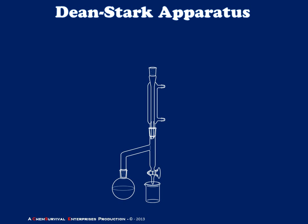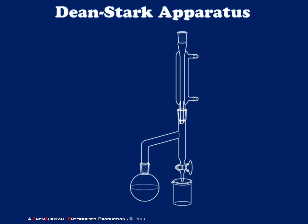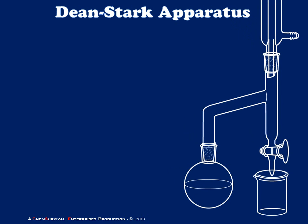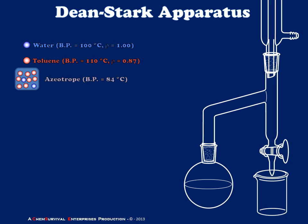Now that you've had your tour of the Dean-Stark apparatus, let's take a look at this thing in action. Let's begin by considering a very simple system: naturally water will be involved, with a boiling point of 100 degrees and a density of 1. Let's try to isolate this water from toluene, which boils at 110 degrees and has a density of 0.87. However, we need to acknowledge that water and toluene when boiled form an azeotrope, with a boiling point of about 84 degrees centigrade, and the composition of this azeotrope is somewhere in the neighborhood of 80% toluene.